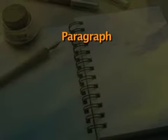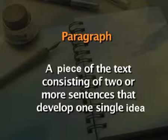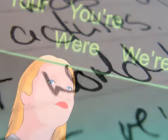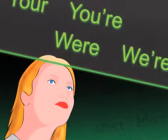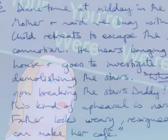Now let us look at what a paragraph is. A paragraph is a piece of text consisting of two or more sentences that develop one single idea. Every paragraph has a main idea, which sometimes comes at the beginning of the paragraph and sometimes at the end. There is no hard and fast rule that says the main idea should come at the beginning or at the end.